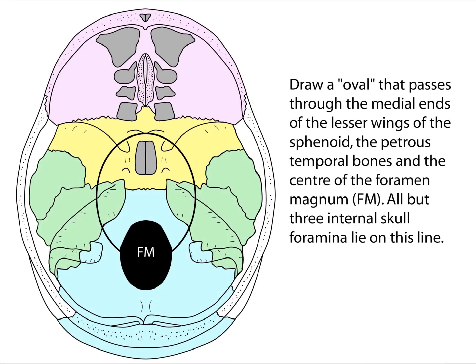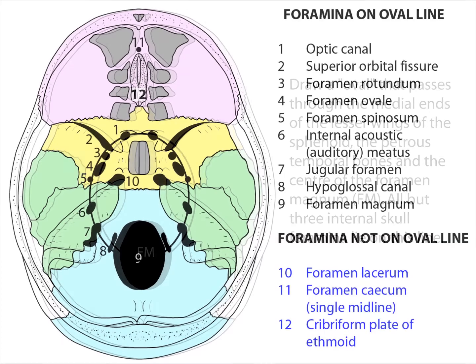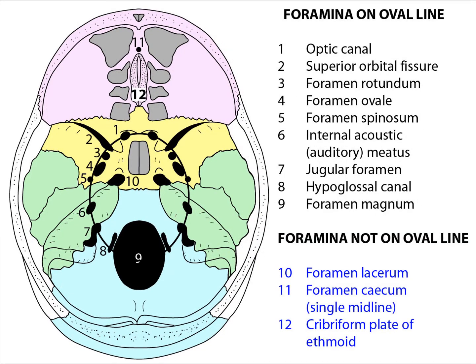We're going to look at the exit of the cranial nerves from the skull. One convenient way is by drawing an oval that passes through the medial ends of the lesser wings of the sphenoid, through the petrous temporal bones, and the centre of the foramen magnum. All but three of the internal skull foramina lie on this line.